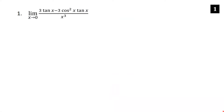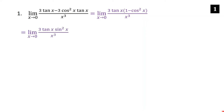Find the limit as x goes to zero of (3tan x − 3cos²x·tan x) / x³. First, factor out 3tan x, leaving 1 minus cos²x. And 1 minus cos²x is just sin²x by the Pythagorean identity.